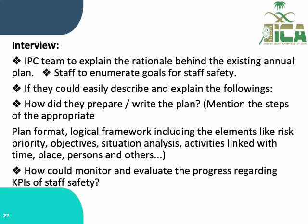During staff interview for A5.3, interview the infection control team to explain the rationale behind the existing annual plan. Staff should be able to enumerate the goals for staff safety and explain how they prepared and wrote the plan, including the steps for appropriate plan format and logical framework — covering elements such as risk, priority objectives, situation analysis, and activities linked with time, place, and persons. They should also explain how they monitor and evaluate progress regarding KPIs for staff safety.